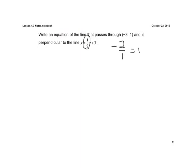So our slope m is now negative 2 over 1. We have a point, so we're going to use point-slope form. Plug it in: y minus our y-coordinate, which is 1, equals our negative reciprocal slope, negative 2 over 1, times x minus our x-coordinate, negative 3.